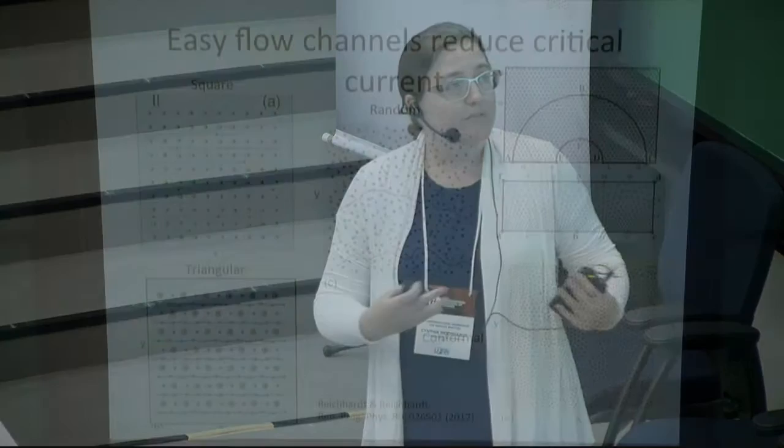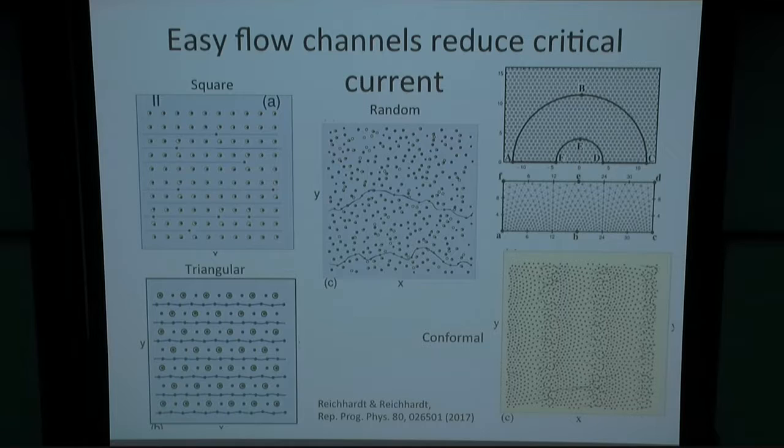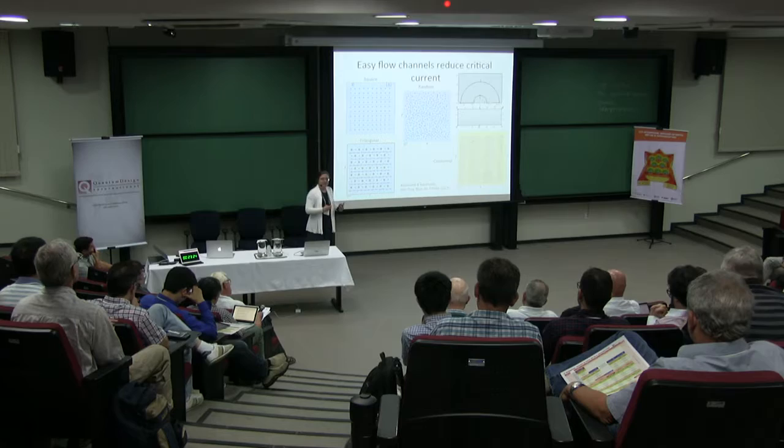The obvious thing would be to not make the arrangement regular. If you just put down random pinning, you would think you would get rid of the channels. But unfortunately that doesn't work, because since it's a random distribution, you have some places where you have extra pinning sites — more dense — and some places where it's less dense. And in the less dense areas, you wind up nucleating these channels of flow, and you wind up with a situation that's actually worse than if you had the pinning sites in a regular arrangement.